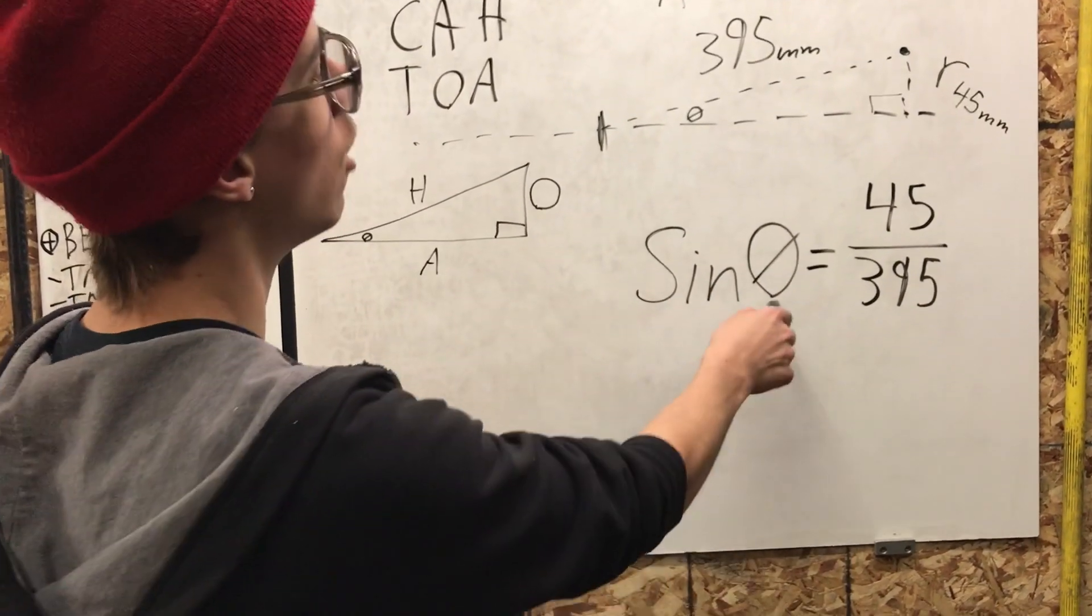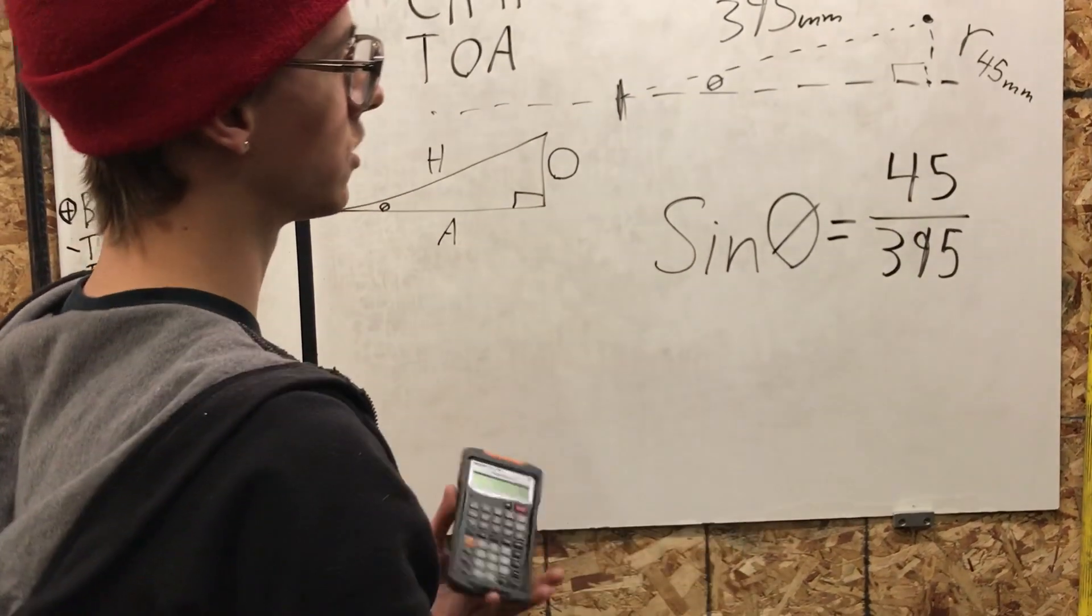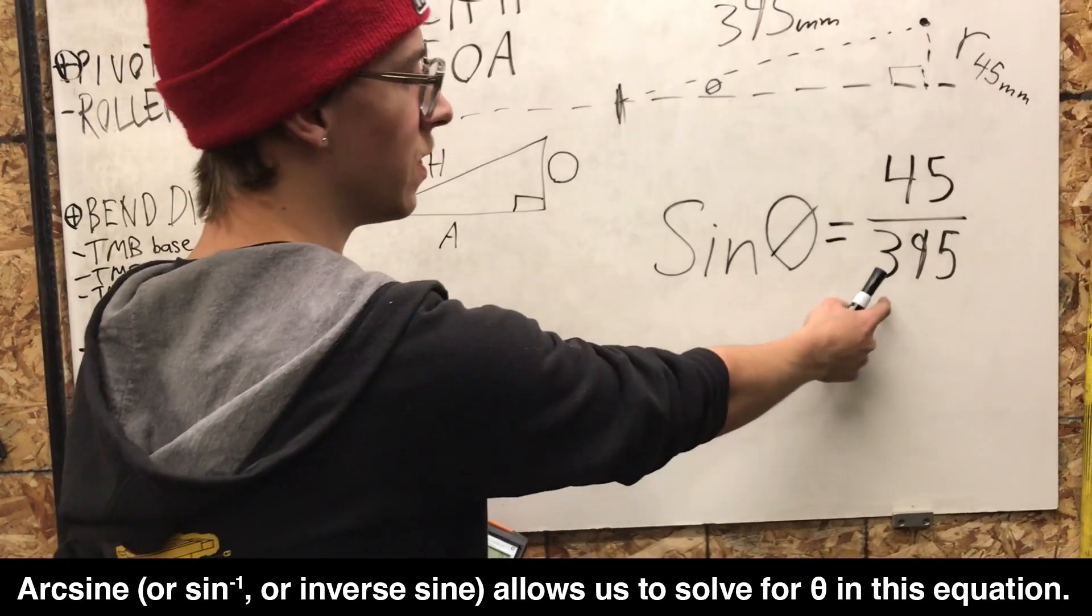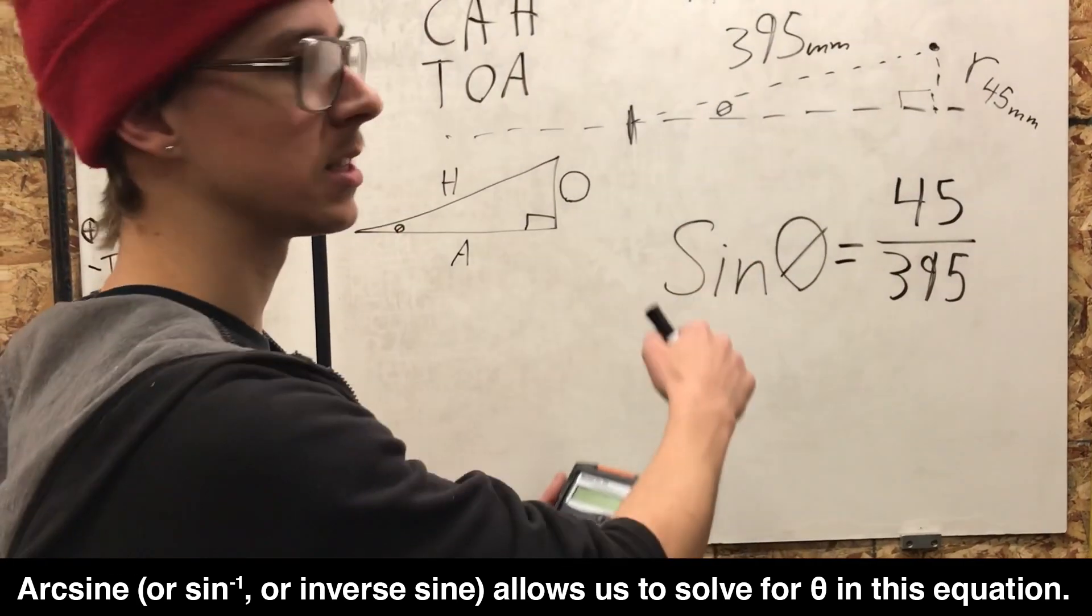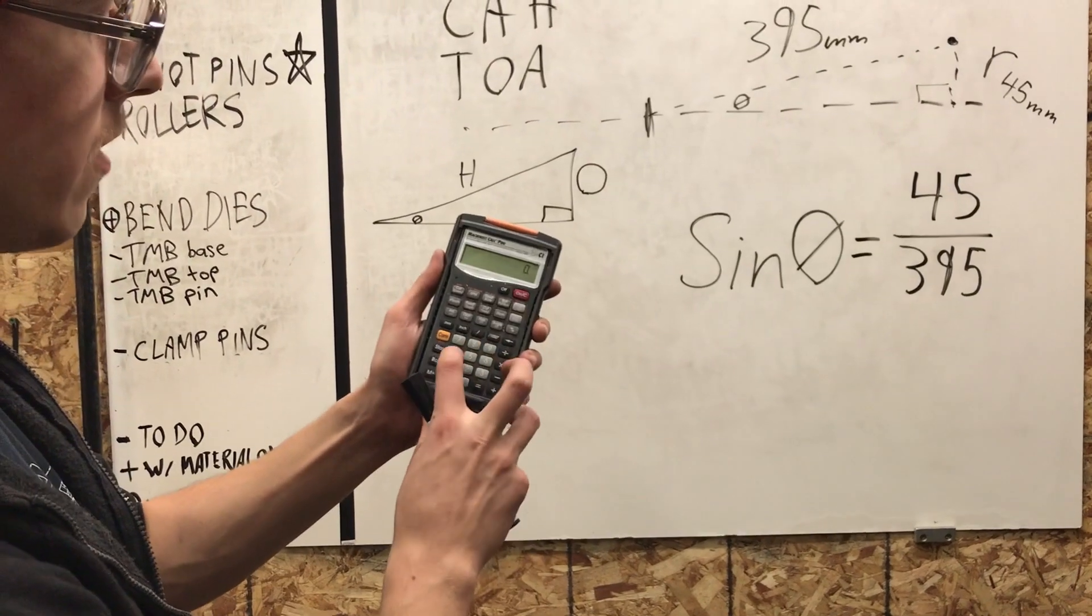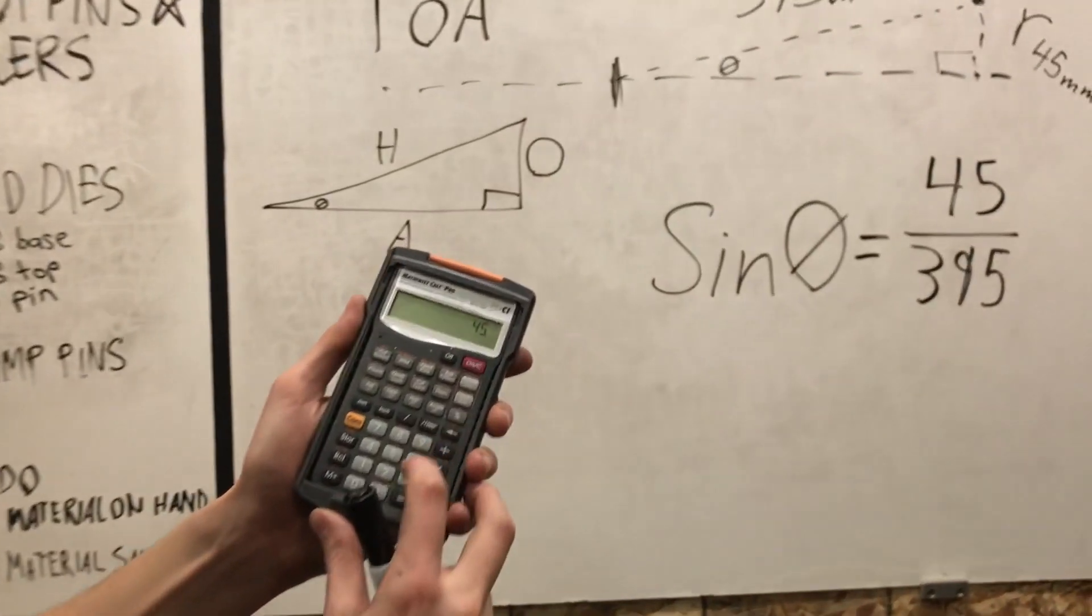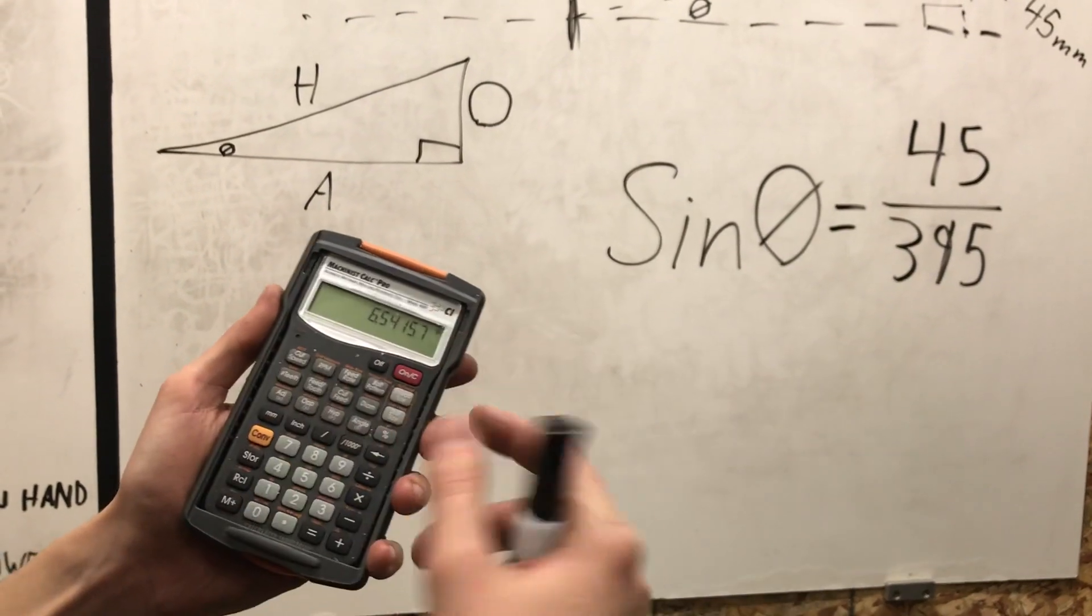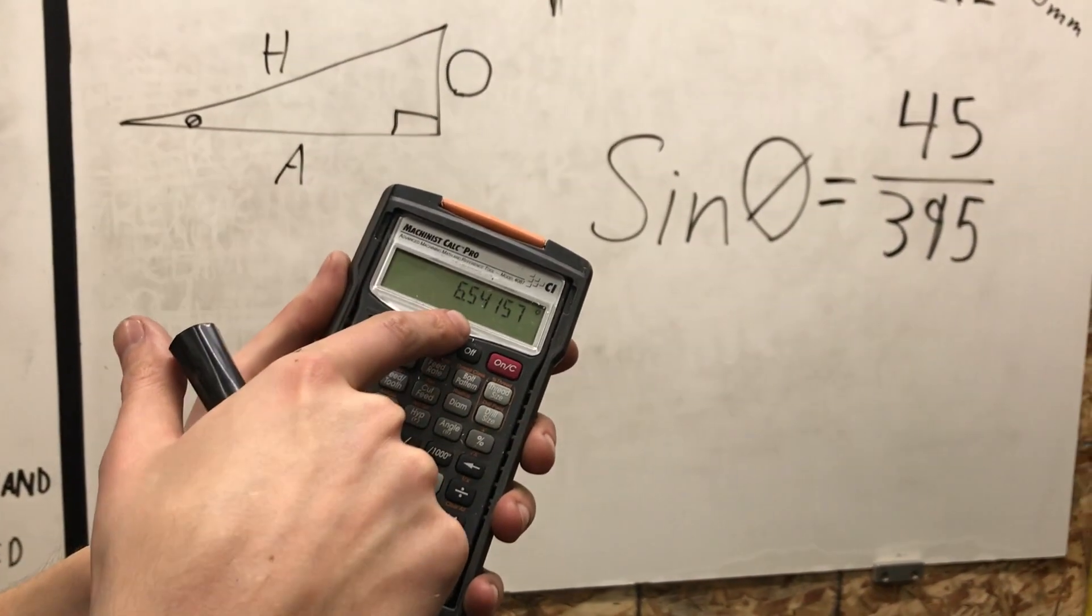But in this instance, we don't know theta. We don't know that angle, so we have to use arc sine. We know what this is, so we type in this value, and then we hit the arc sine button, and it tells us what the angle is. So if you take 45 divided by 395 equals, and then you go arc sine, it tells you 6.54 degrees.